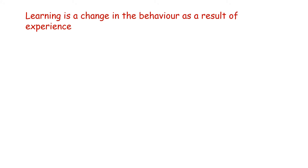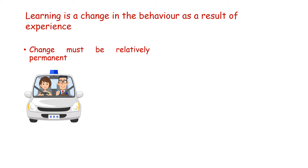Let us first understand the meaning of learning. Learning in simple words is a change in the behavior as a result of experience. You need to keep in mind two important points. The first one is that change must be relatively permanent — our behavior must be different compared to our behavior prior to the learning experience. For example, when you learn to drive a car, there is a change in your behavior during the process of learning. You become more confident than before.